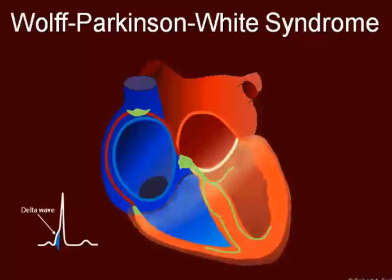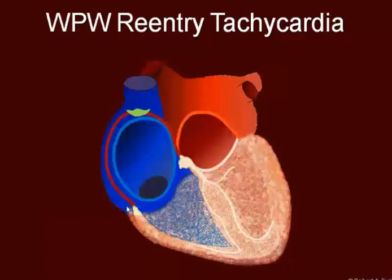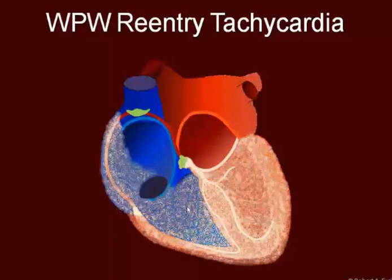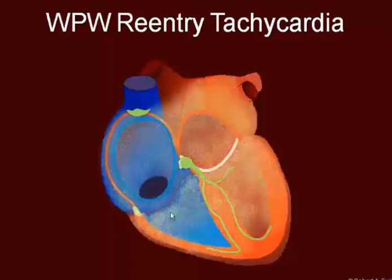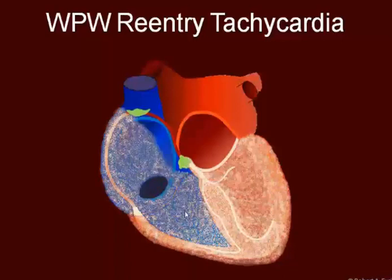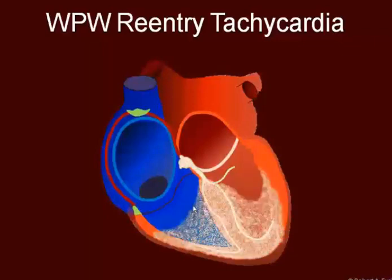This can go wrong, usually because of a premature contraction. We come down, move back up, through the bundle of Kent, back around, and through. Come around and we set up a loop. This is an orthodromic loop, because it's coming from the ventricles through the accessory pathway, back down through the AV node. An antidromic loop can also occur in which it comes back up this way, down through the bundle of Kent, and then back up through the AV node — that is more rare.